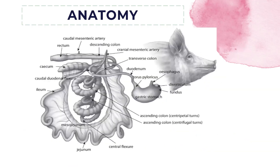Here is an illustration of the gastrointestinal part of the pig. As you can see, here is the duodenum, here is the pylorus, the duodenum, the jejunum, and the ileum.